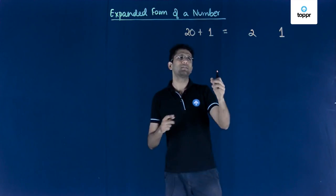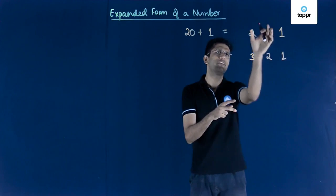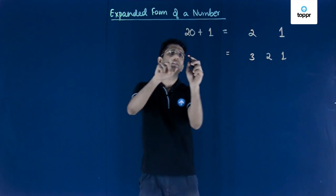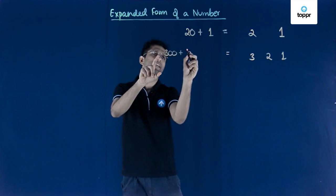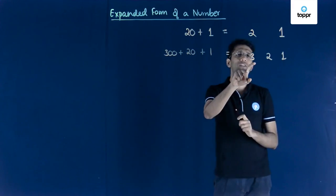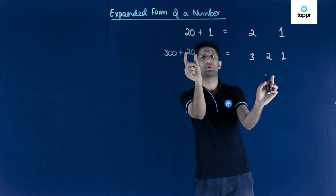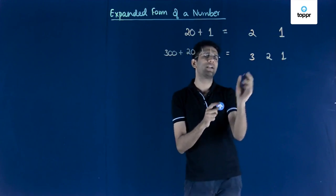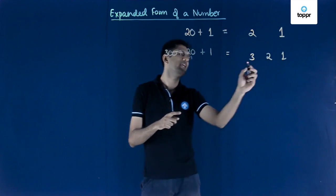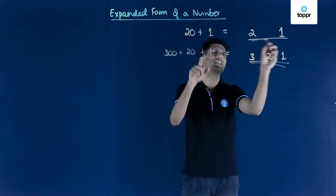Now if we consider another digit added to this number — suppose we are talking about the number 321 — we can write 321 as 300 plus 20 plus 1. Here, 1 was at the units place so we wrote 1. Then 2 was at the tens place, giving us 2 into 10, that is 20. Then 3 was at the hundreds place, giving us 3 into 100, that is 300. Adding all the terms up, 321 equals 300 plus 20 plus 1.